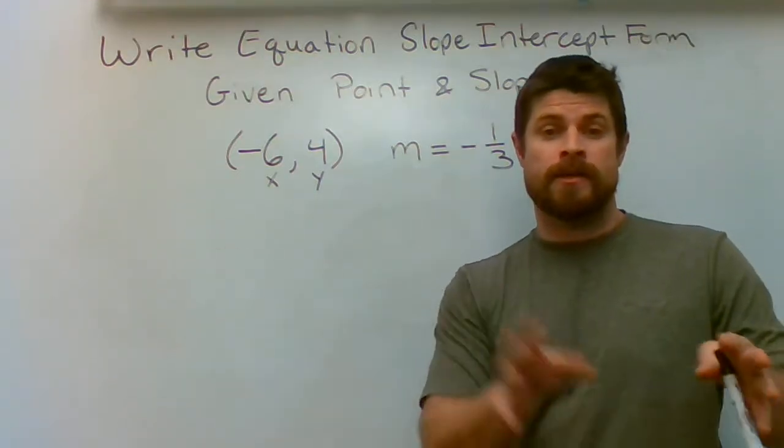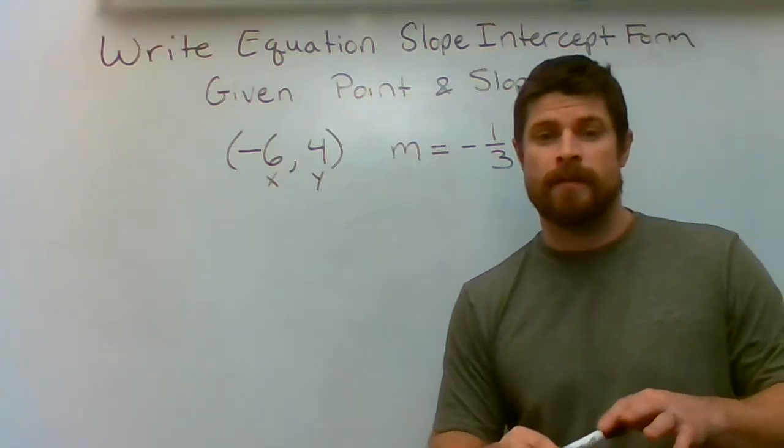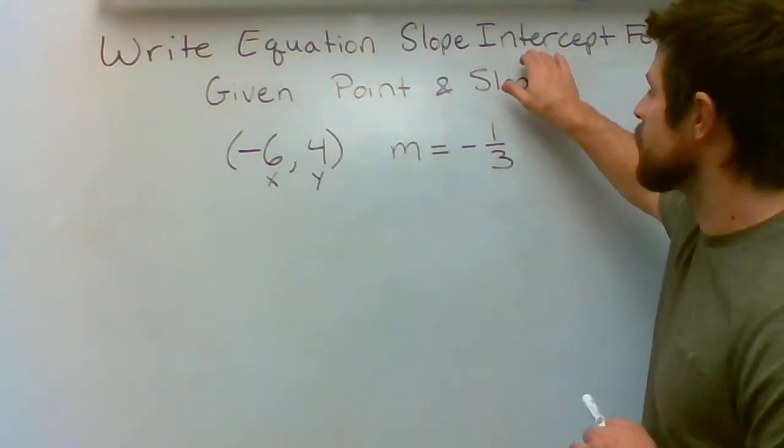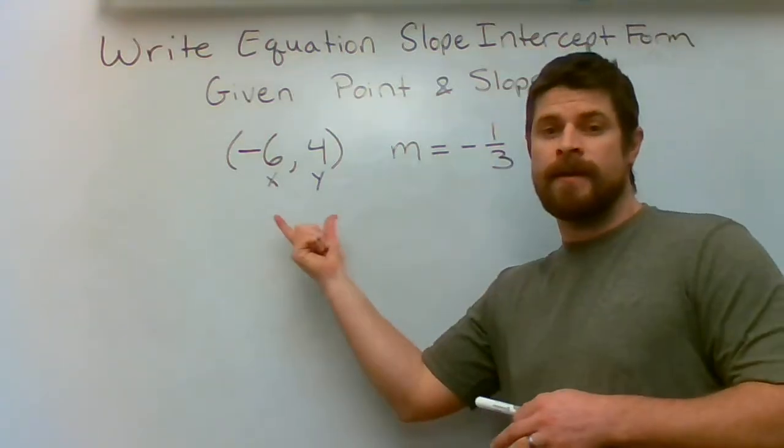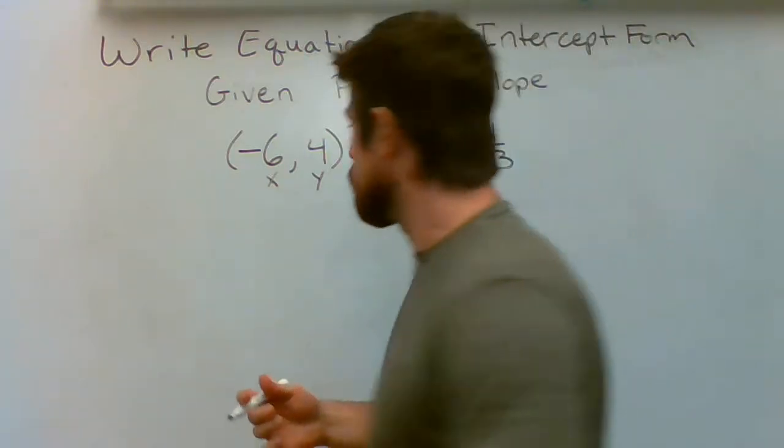So normally when you see a point and a slope, you're going to write it in point-slope form. That's exactly how we're going to start this problem. But what your teacher is asking you to do on this test is are you able to come up with the intercept, the part that's not given with the two pieces of information that he or she provides. So here we go.